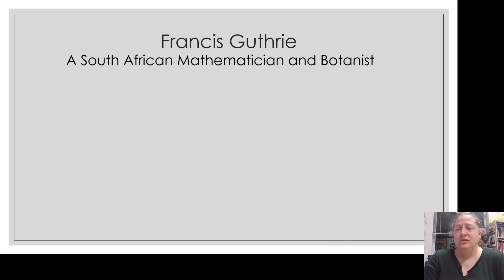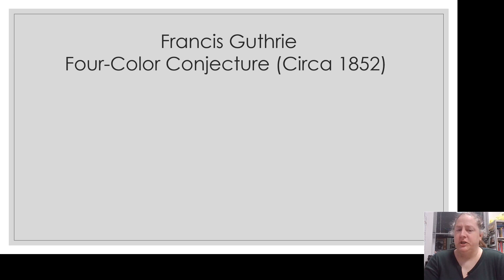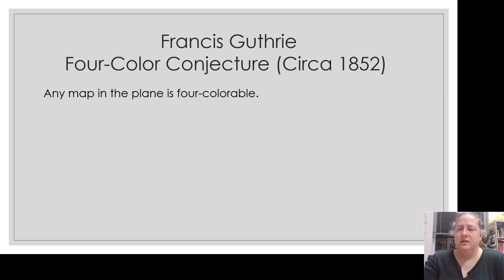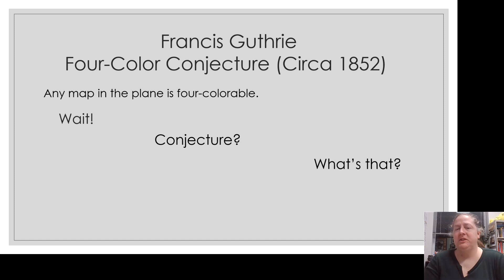We're going to talk about Francis Guthrie for a little bit. He was a South African mathematician and botanist, and he put forth something called the Four-Color Conjecture in 1852. This Four-Color Conjecture was that any map in the plane is four-colorable. A conjecture is something that we think is true as mathematicians — it's a mathematician's version of a hypothesis. We put out this conjecture and say we think this might be true, but we're not sure.